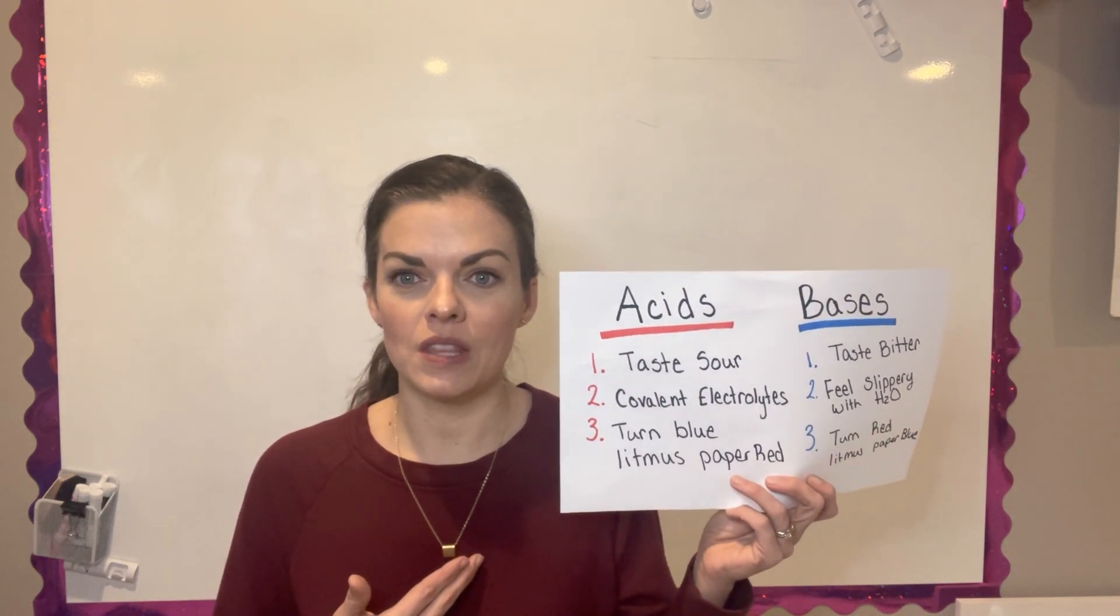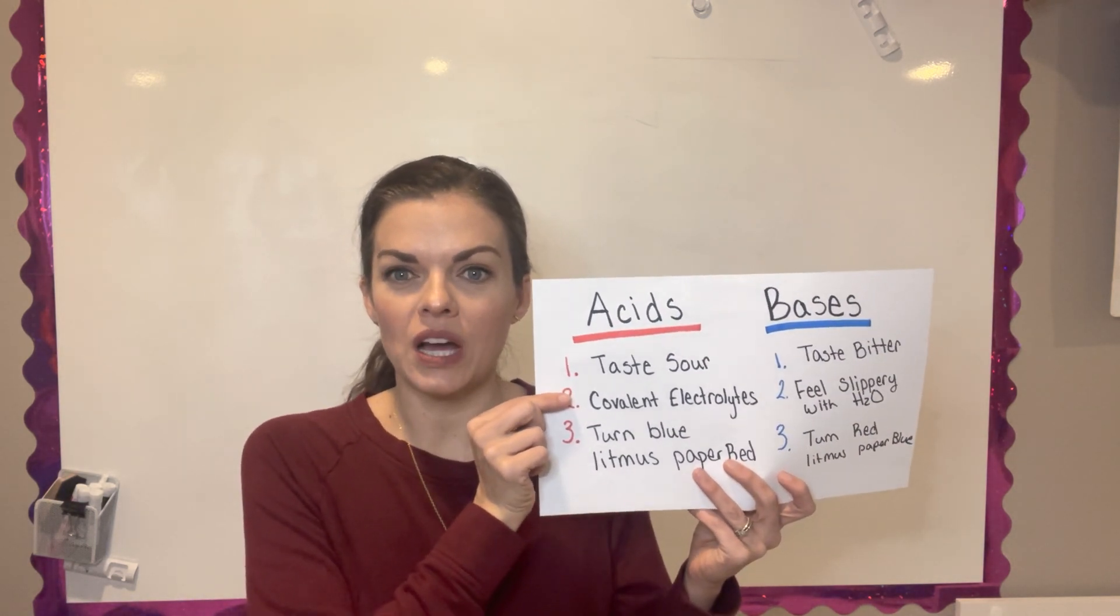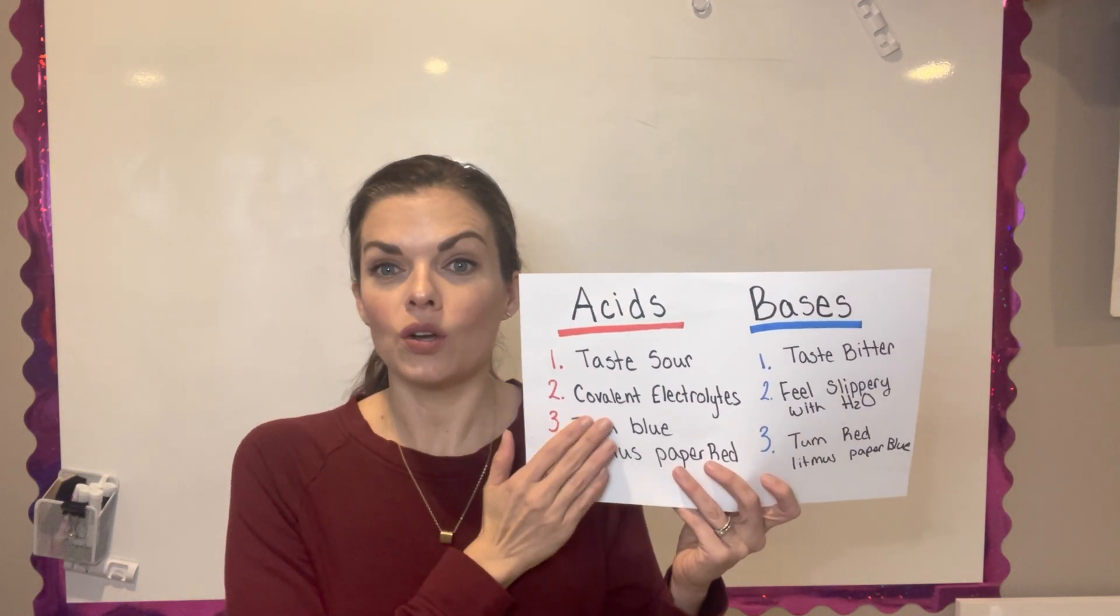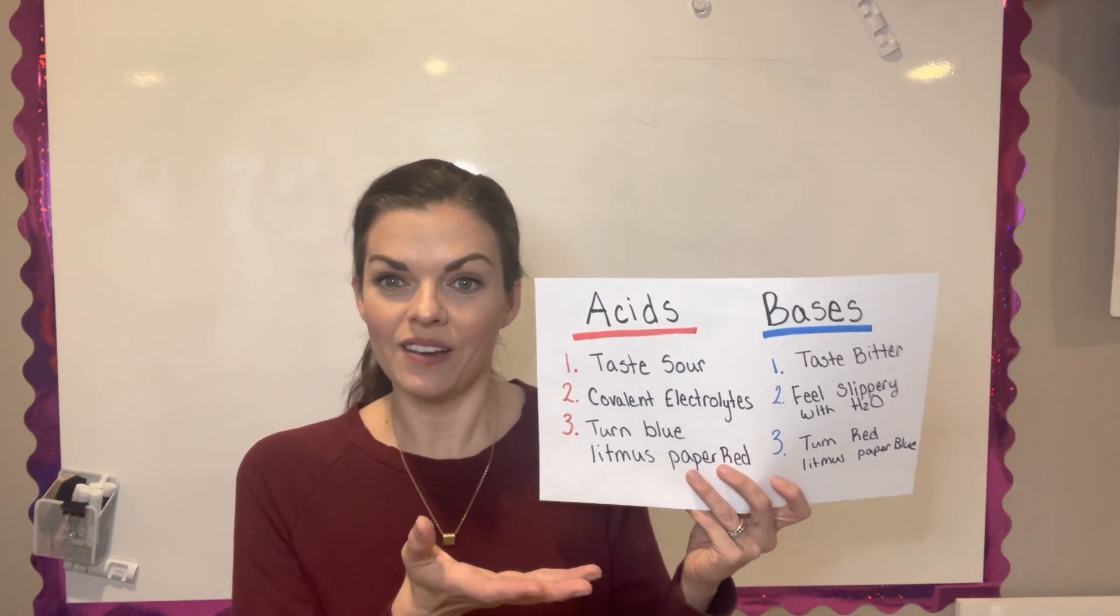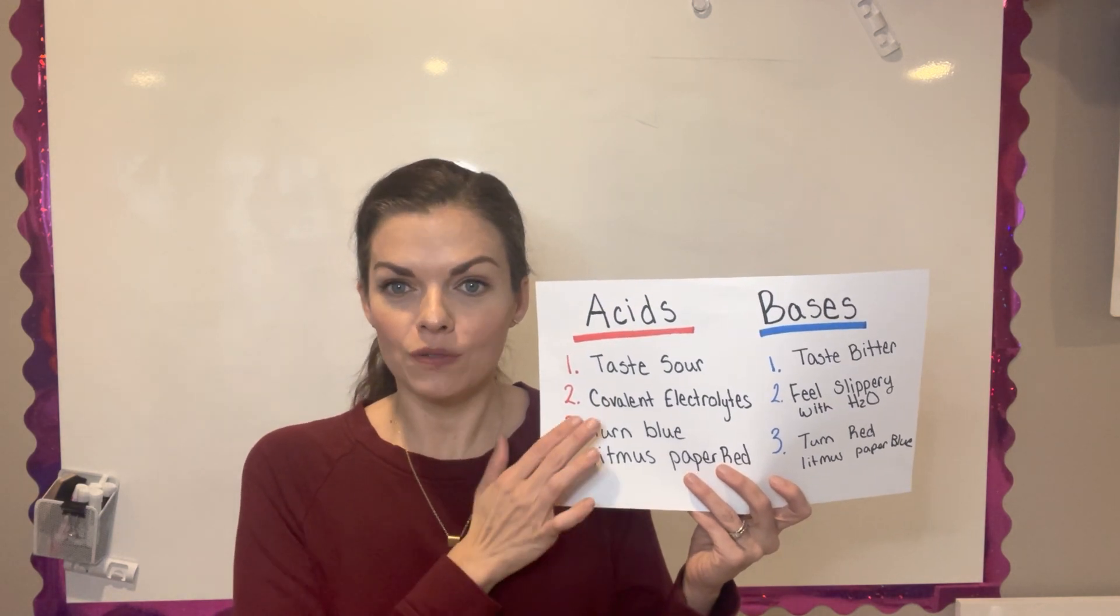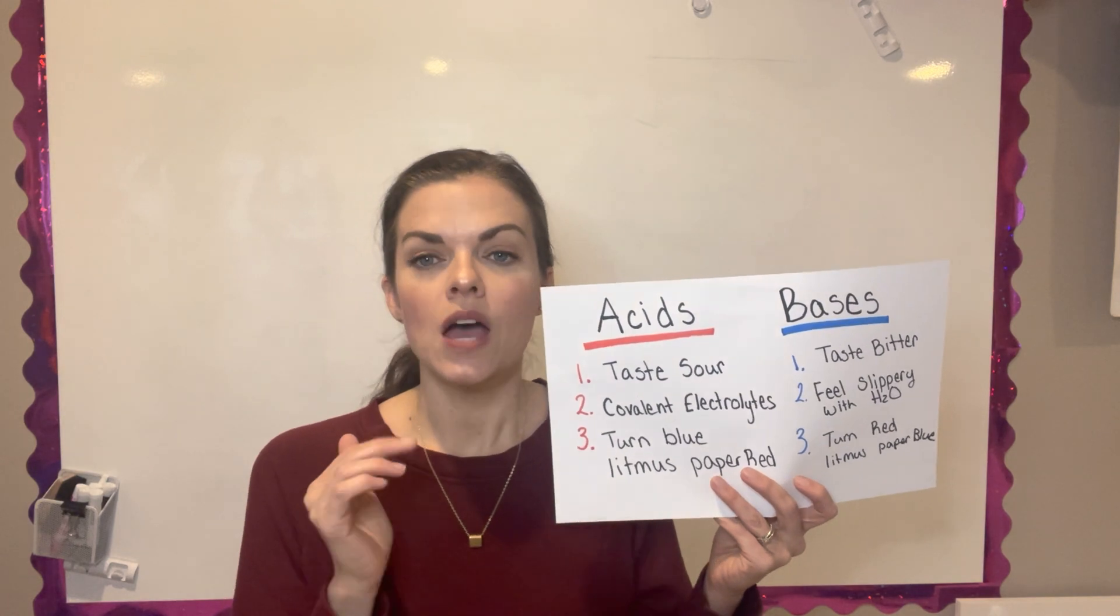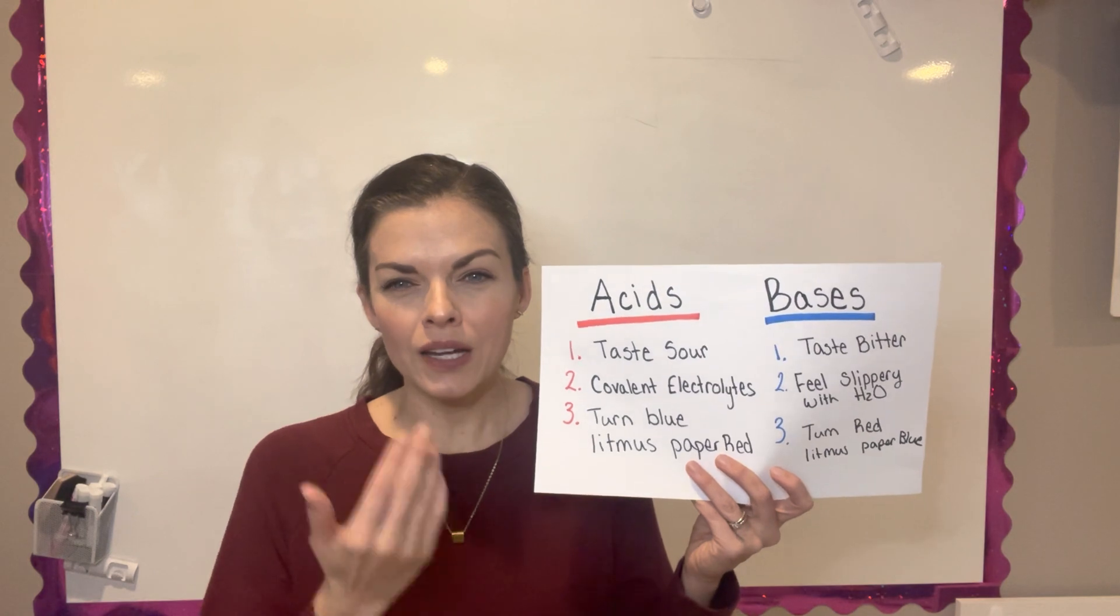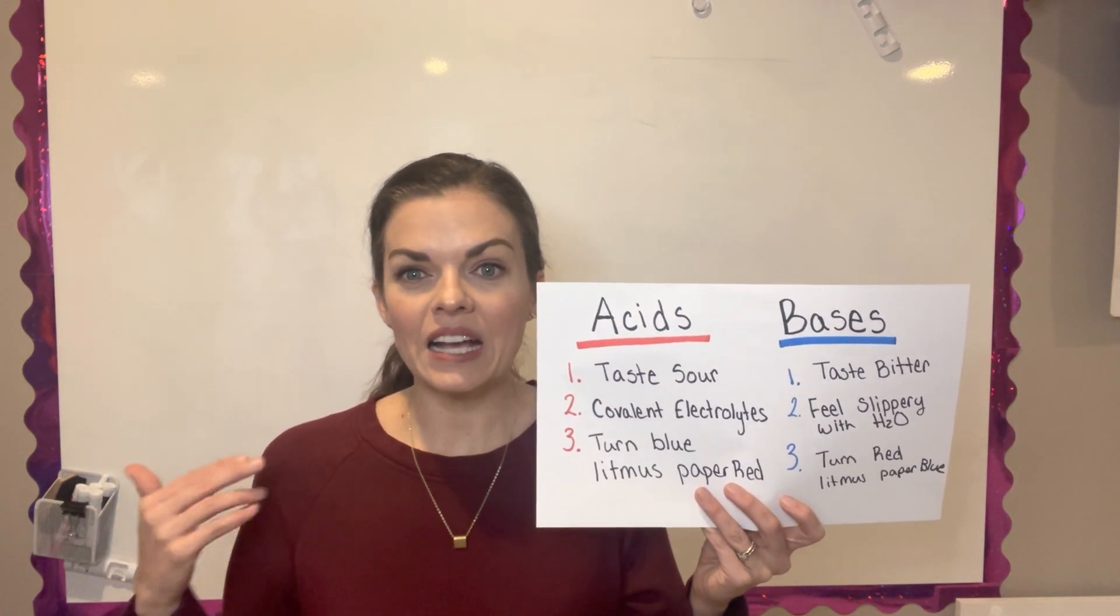Acids also contain something that we call covalent electrolytes. At first this is going to be a really weird concept because it kind of goes against what you've learned. We've studied that a covalent compound when it goes into water does not break apart into its ions and does not conduct electricity. But acids behave a little bit differently. Even though they're covalent, not ionic, when they get into water they can actually conduct electricity. It goes against what we've been studying a little bit, but we're going to learn more about that as the chapter goes on.